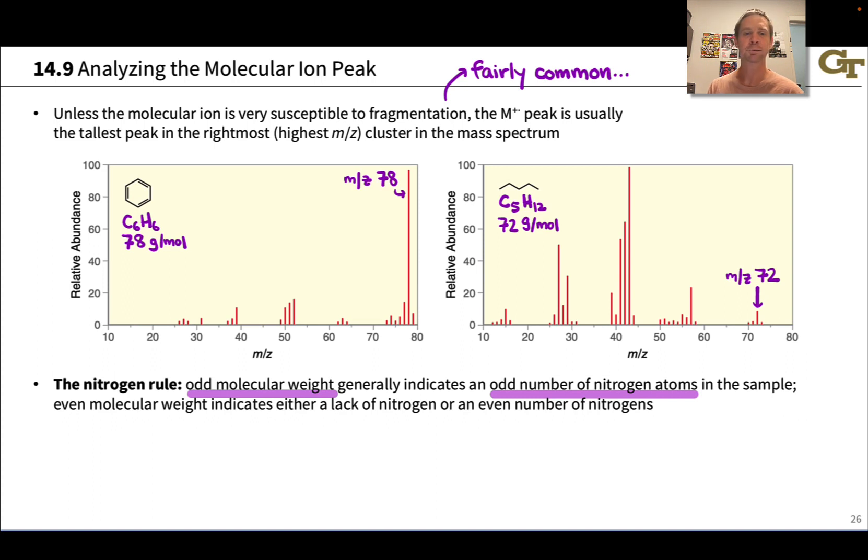Generally, if you have an even molar mass or an even m/z for the molecular ion, that indicates you have an even number of nitrogen atoms or no nitrogen atoms. But typically odd molecular weight often indicates an odd number of nitrogen atoms in the sample. This is known as the nitrogen rule.